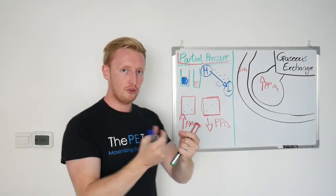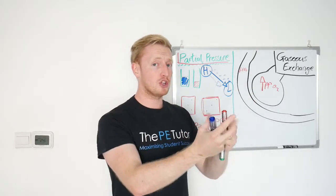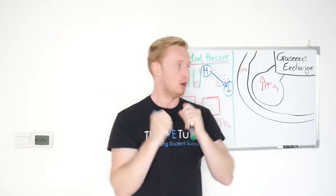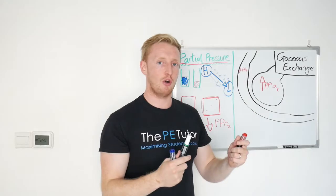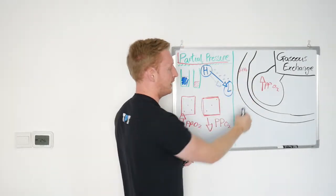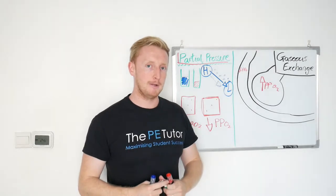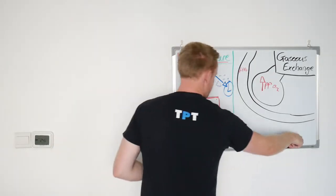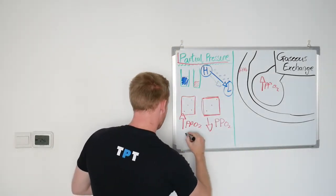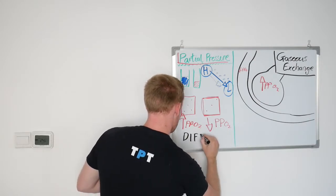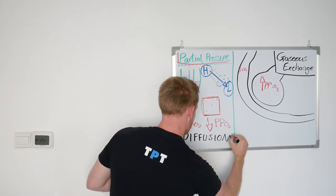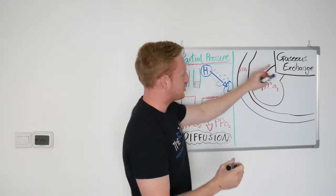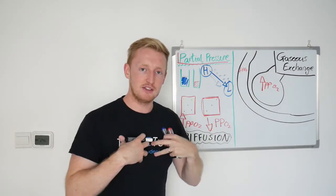Partial pressure, then, is the concentration of the gas in a mixture. We can have a high partial pressure or a low partial pressure, and quite often we talk about them in relation to another mixture. So the air around us has a higher partial pressure of oxygen compared to the blood that's returning to the lungs after it's been around the rest of the body. That movement of gas has a name, and that name is called diffusion — the movement of gas from an area of high pressure to low pressure. And that's how gas exchange is possible at the alveoli inside our lungs.